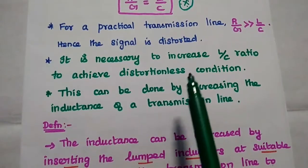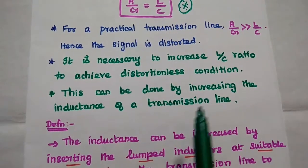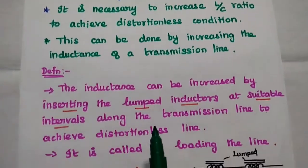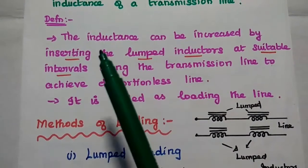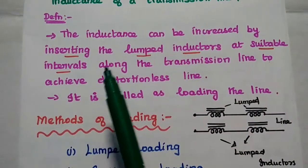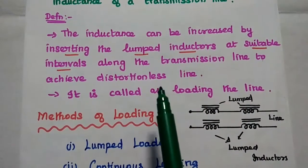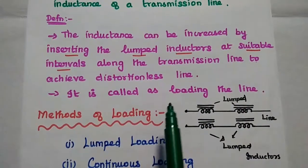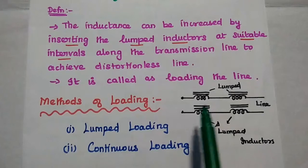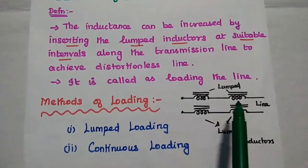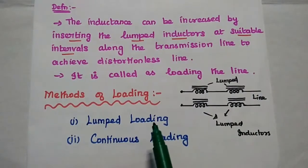It is necessary to increase the L by C ratio to achieve the distortionless condition. This can be done by increasing the inductance of the transmission line — it is called the loading concept. The inductance can be increased by inserting lumped inductors at suitable intervals along the transmission line to achieve a distortionless line. This is called loading the line. The transmission line has lumped inductors placed at suitable intervals to increase the overall inductance value.